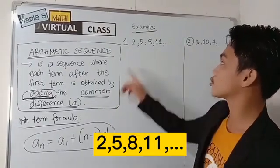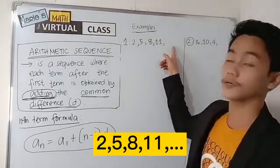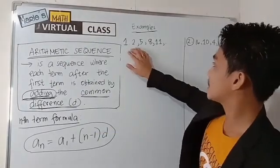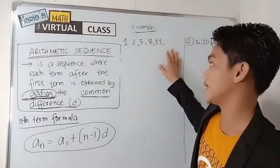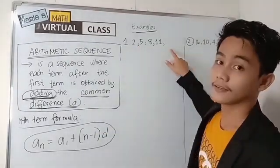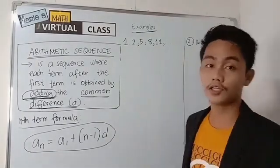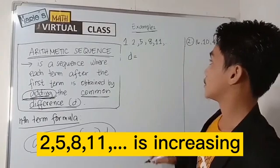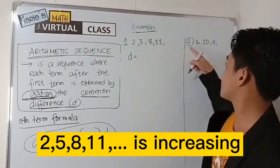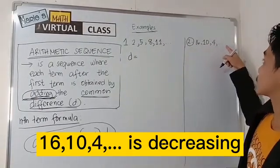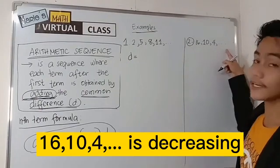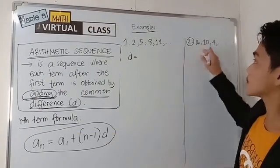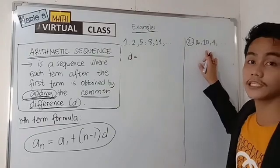Example number 1, the sequence 2, 5, 8, 11, and so on. As you can see, this sequence has a common pattern and it is increasing. And the pattern is addition. So, that is what we call the common difference. This sequence is increasing and in number 2, 16, 10, 4, and so on, this sequence is decreasing. These two sequences are both examples of arithmetic sequence.